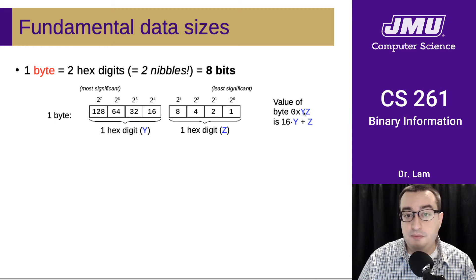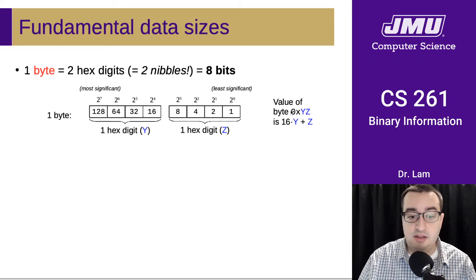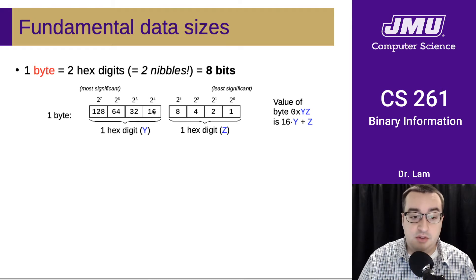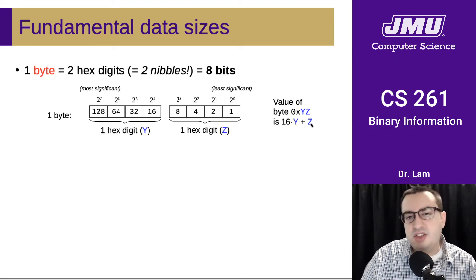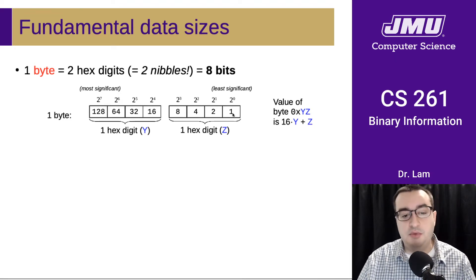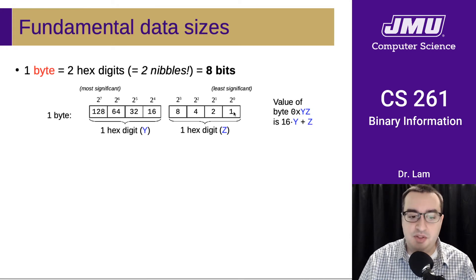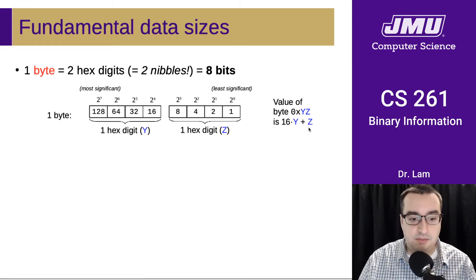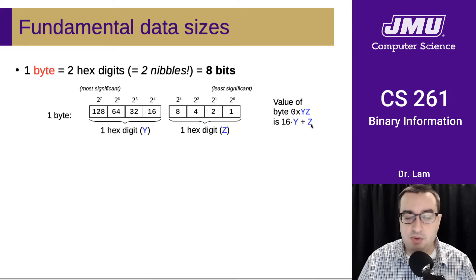So the value of this byte, 0xYZ in hex, is going to be 16 times Y — because that's the higher place value — and then plus Z. You could think of this as Z times 1, because that's the lowest place value on the right-hand side, but because multiplying by 1 doesn't change anything, we can just think of this as Z.